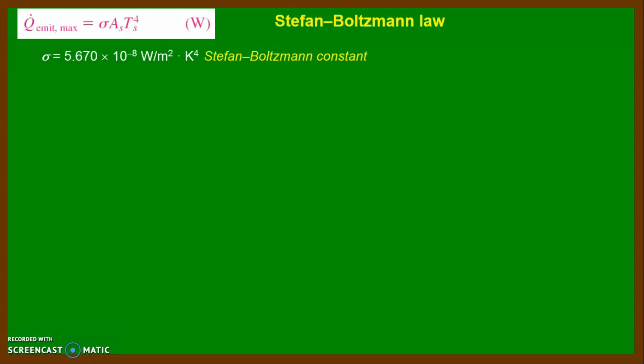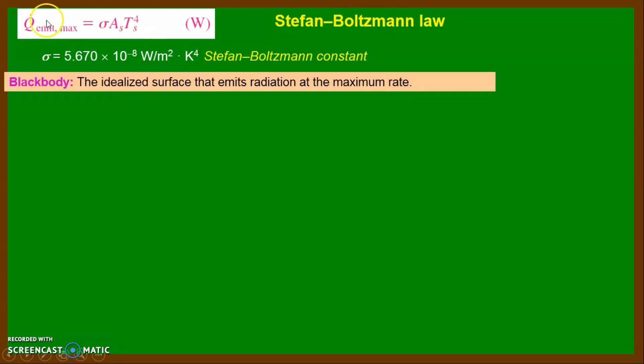The governing law for radiation covers both emission and absorption. The radiation heat emitted by any matter is calculated using Q-dot emit maximum equals σ·As·Ts⁴. This law is called the Stefan-Boltzmann Law, where σ is the Stefan-Boltzmann constant with a value of 5.67×10⁻⁸ W/m²·K⁴. The word 'maximum' is used because this equation applies to a black body — an idealized surface that emits radiation at the maximum rate.